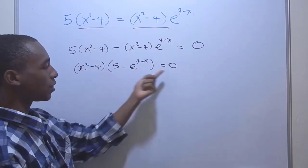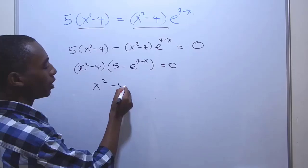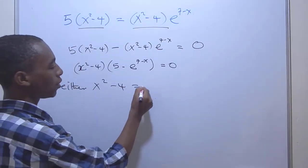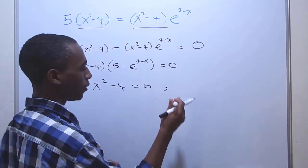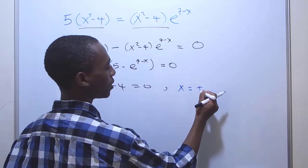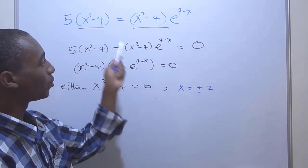So I can either have this equal to zero or this equals to zero. Let's begin with x² - 4. So this equals zero, in which case you can see that x is going to be ±2 as the first two roots to this equation.